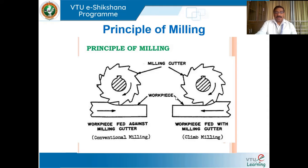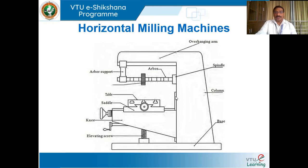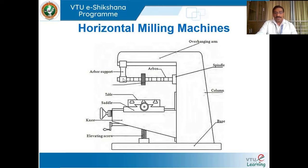We had seen the principle of milling — what was conventional milling, what was climb milling — and we discussed the functionality of the horizontal milling machine. In a horizontal milling machine you have the column and base as integral parts, then the spindle in which the arbor is placed. The tapered portion of the arbor goes inside the spindle and the overhanging portion is supported by the overhanging arm and arbor support by means of a small bearing, so that rotation is almost frictionless.